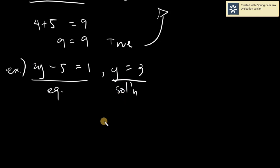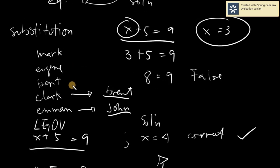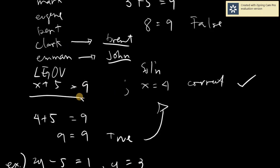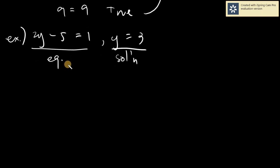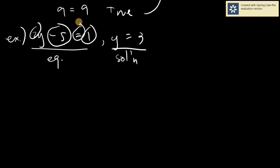Let's have another example. Say we have 2Y minus 5 equals 1 and Y equals 3. What do we need to do? All the values of Y in our given equation will be replaced by 3 — this is substitution. The substitution only works for Y and not for the 2, not for the negative 5, not for the equals sign, not for 1 — only for Y.